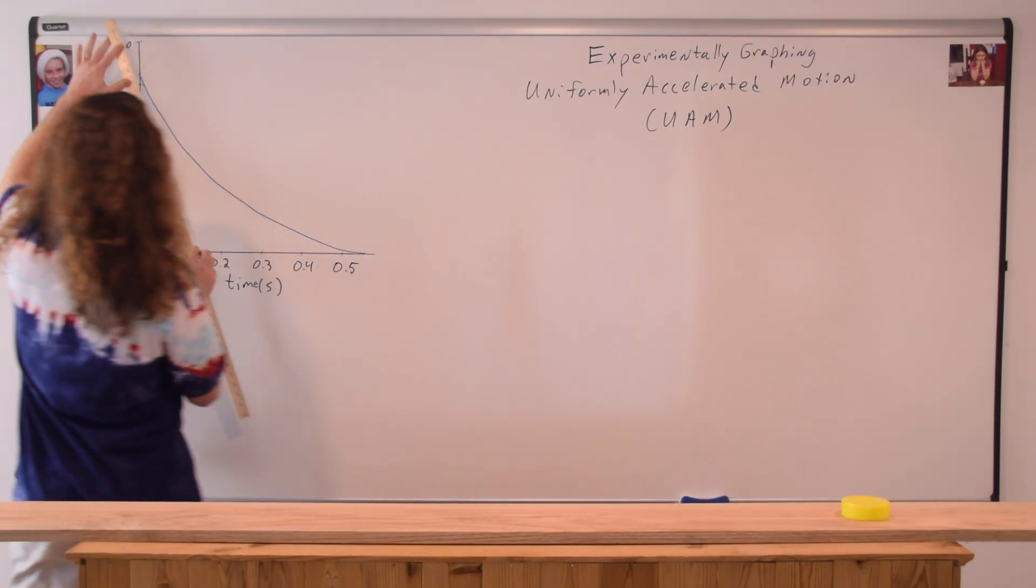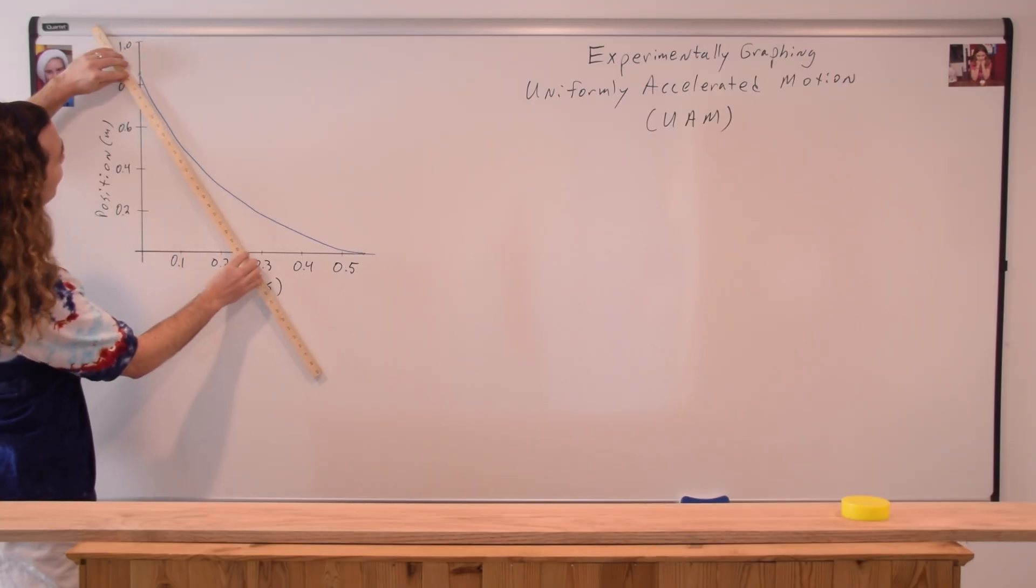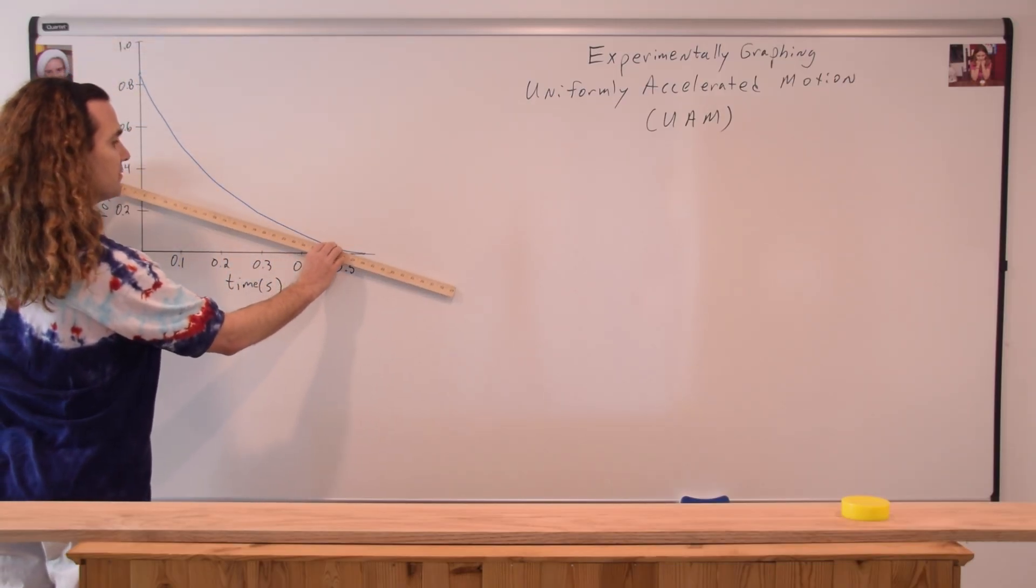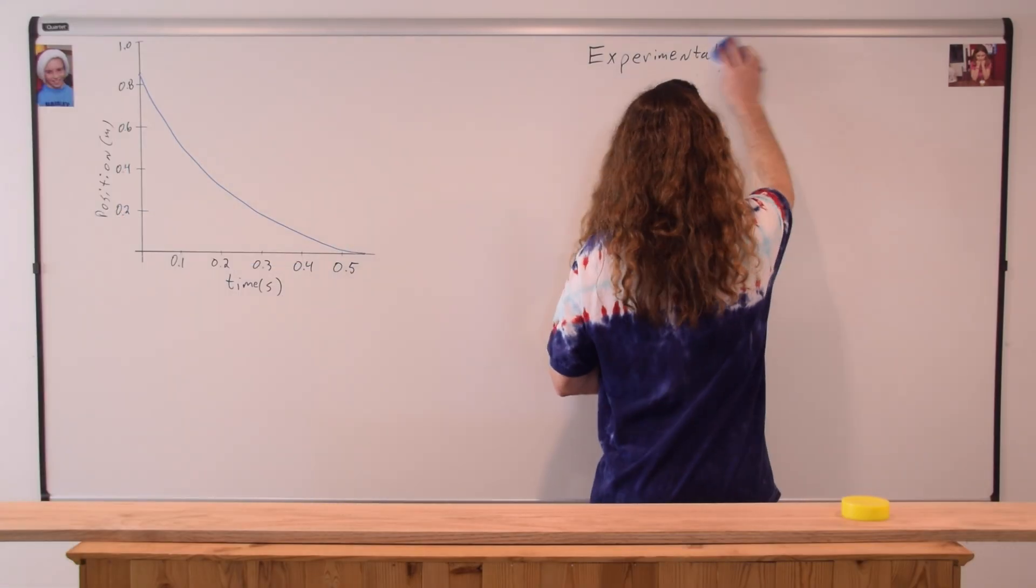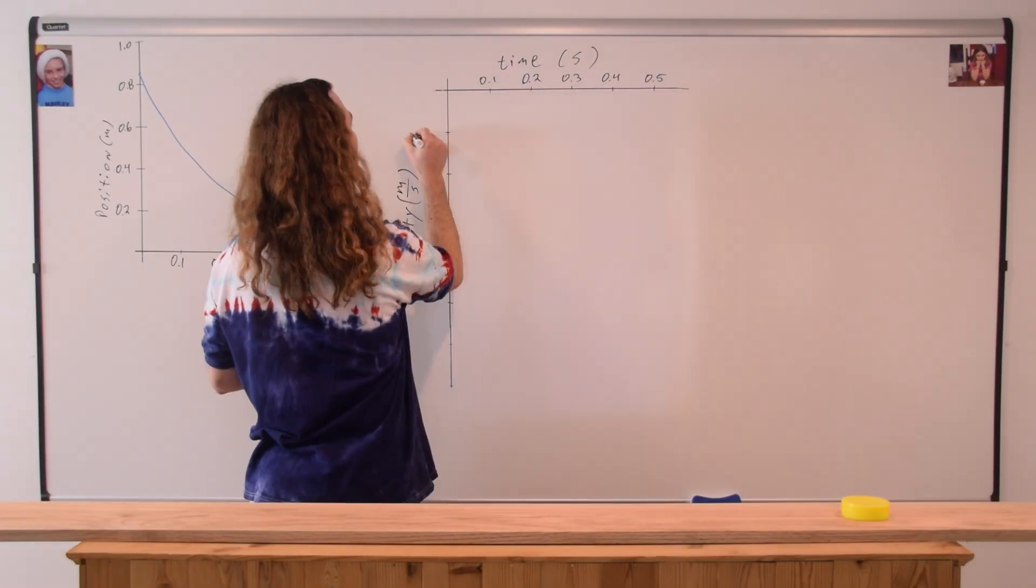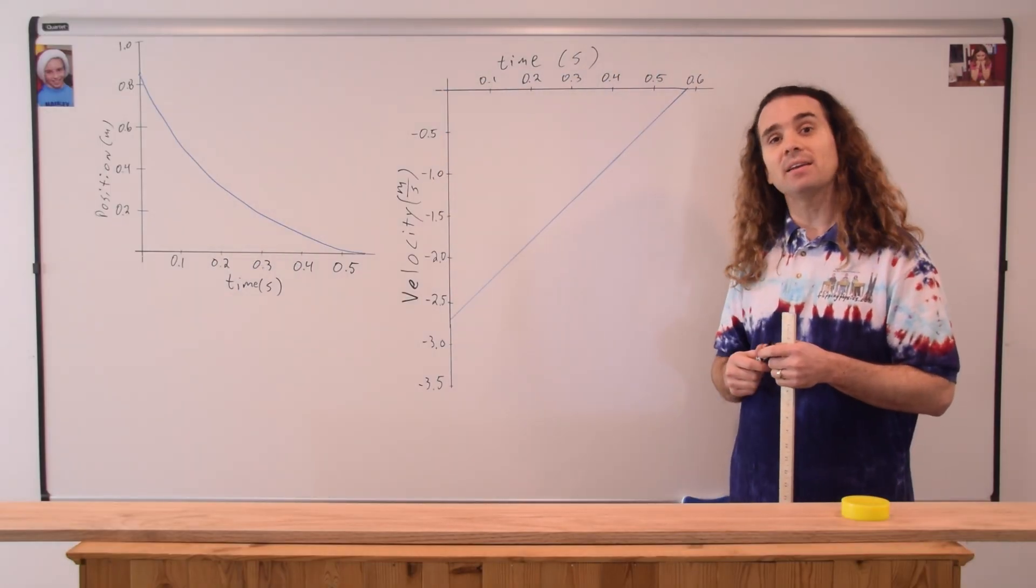Correct. The velocity starts out negative and then as time goes by, that velocity increases in value until it approaches a value of zero. Let's see if this matches what we get experimentally.